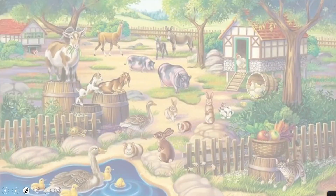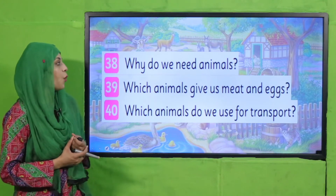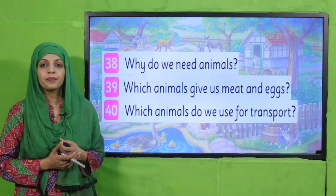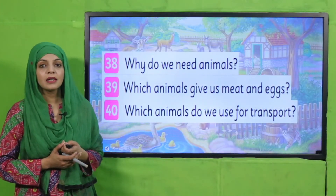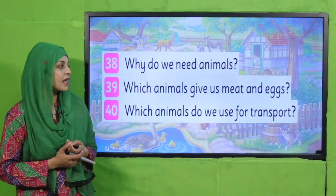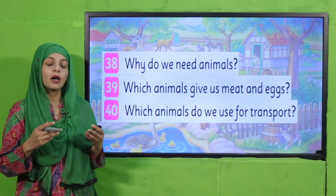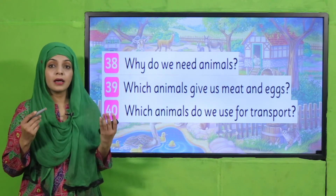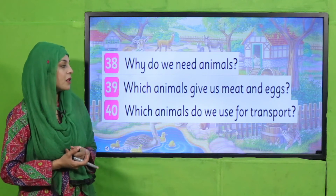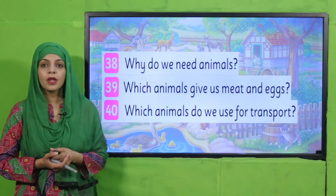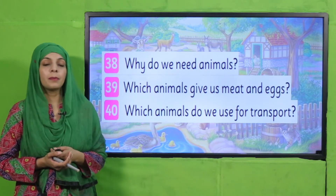Now is the time for evaluation. Quickly answer the questions. Why do we need animals? Because they provide us with food, transport, and joy. Which animals give us meat and eggs? Cows, goat, fish, and hen — they provide us with meat, and hen provides us with eggs. Which animals do we use for transportation? Ox, horses, and donkeys help us in transport.